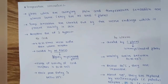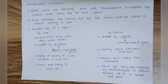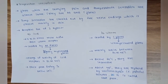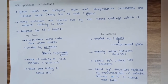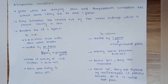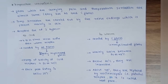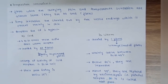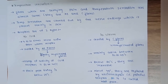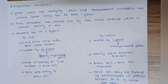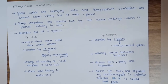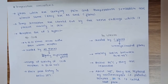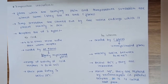Now discussing the lateral spinothalamic tract, which carries temperature and pain sensation. Fibers carrying pain and temperature are almost the same — A-delta and C fibers. Temperature sensation is carried by free nerve endings, present mainly in skin. Receptors are of two types: cold and warm. Cold sensation is carried by A-delta (myelinated) fibers, while warm sensation is carried by C (unmyelinated) fibers. Cold receptors are four to ten times more numerous than warm receptors.